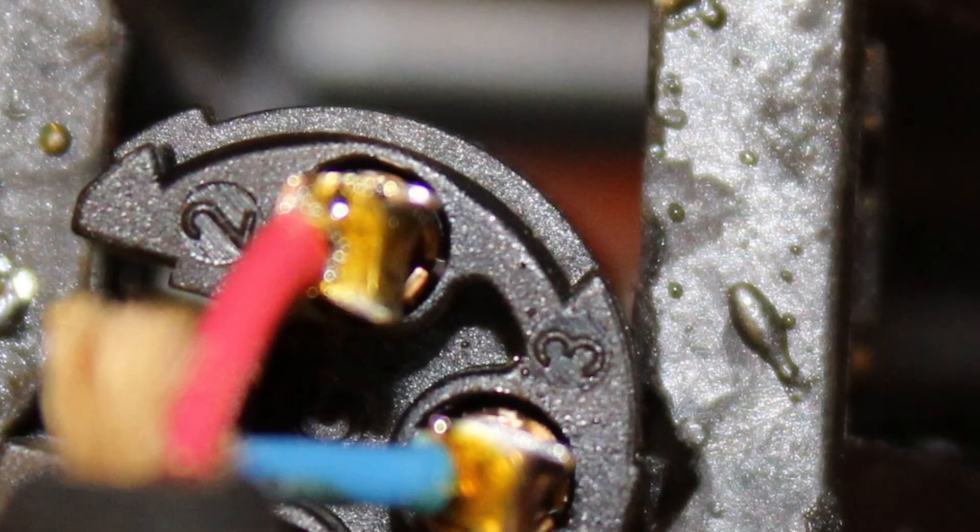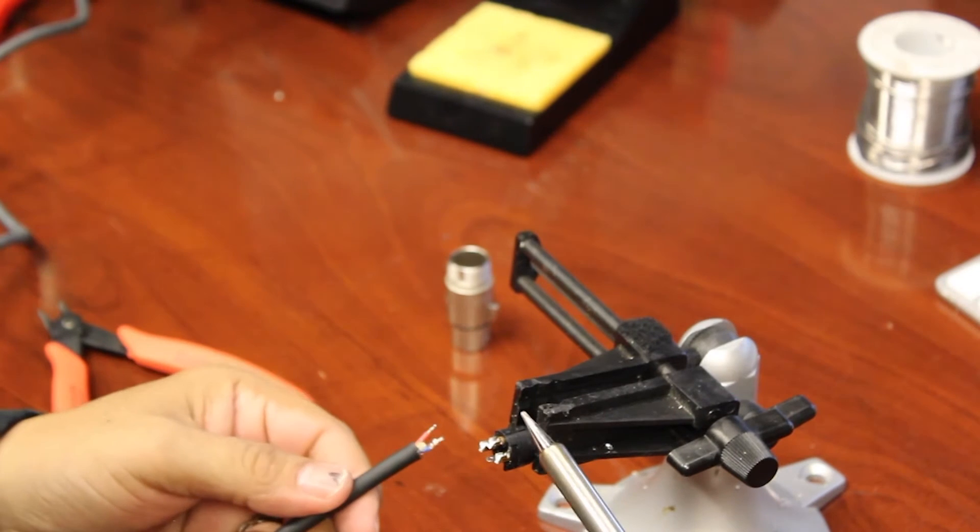So before we solder, we're going to have to locate the numbers on the connector that correspond to the wires that you're going to put on there. Sometimes they're hard to see. You may need to use a magnifying glass. But basically, number one is your shield. You'll solder number one to the shield. Number two is usually your positive or hot, and number three is usually your negative or cold. Red is usually positive and black is usually negative. In this case, we have a blue wire. So we decided to go ahead and make red the positive and blue the negative.